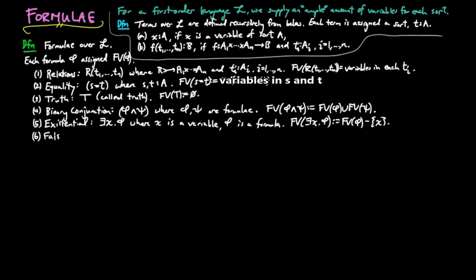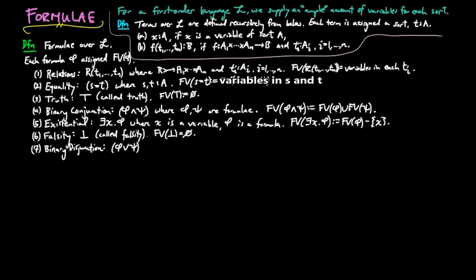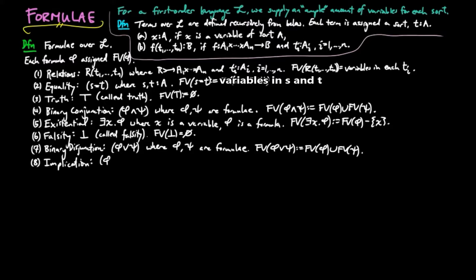Six, falsity: we also use a symbol — an upside-down T — called falsity, and it also has no free variables. Seven, binary disjunction: the binary disjunction of phi and psi, where phi and psi are formulae, and the free variables of the disjunction is the union of the free variables of phi and the free variables of psi. Eight, implication: phi implies psi, where phi and psi are formulae, and the free variables of (phi → psi) is the union of the free variables of phi and the free variables of psi.